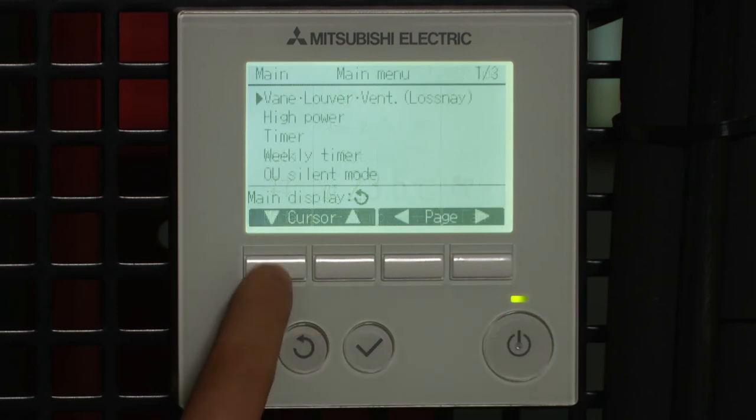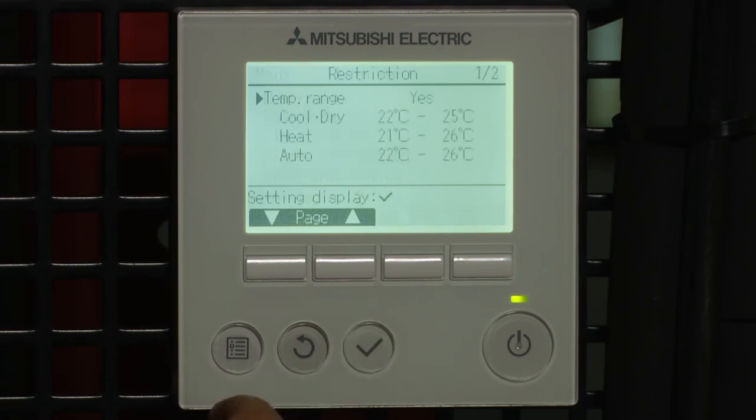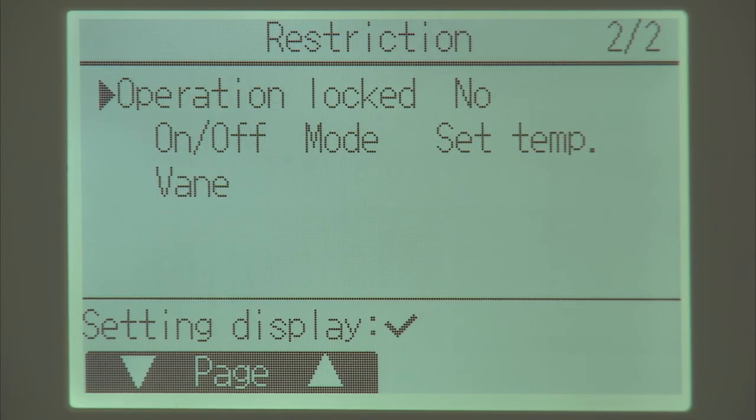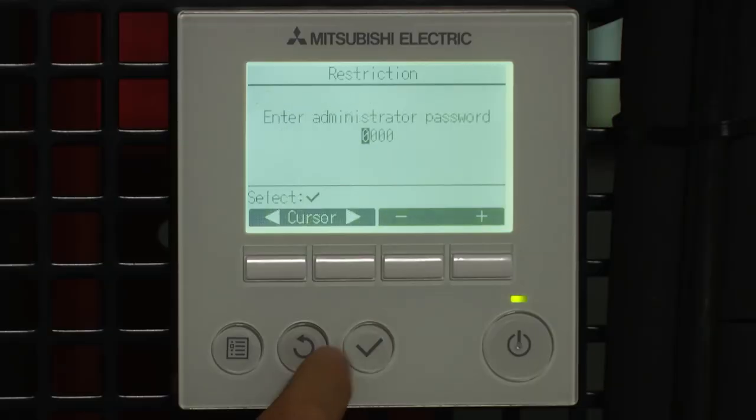And I'm going back into the menu option. And we're going to go into restrictions. Select restriction. Scroll down into the operation lock. Tick to accept. It's going to ask you for the four zeros.